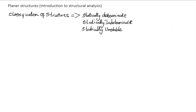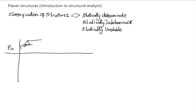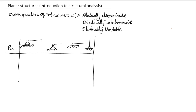First of all, we have a pin support. A pin support is normally represented by that triangle symbol. These are the kinds of supports you see, and whenever you see them, these are pin supports. For any pin support, we have two reaction forces: the vertical and the horizontal force.